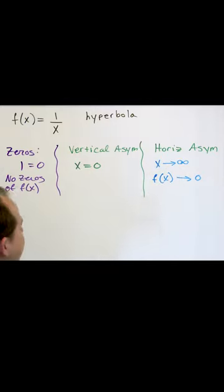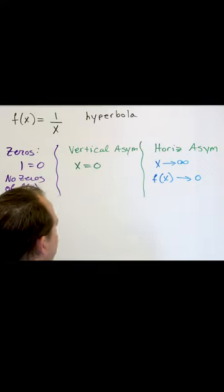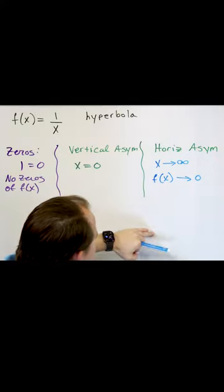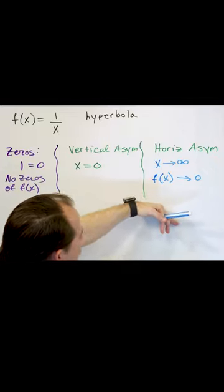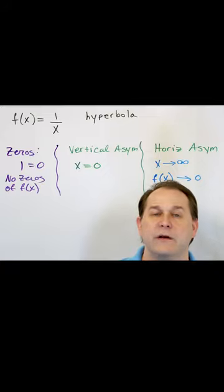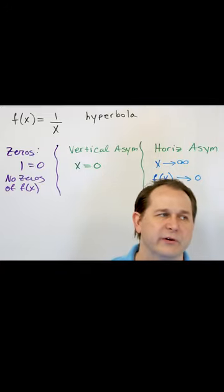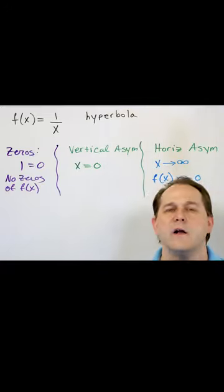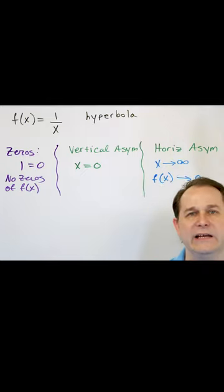So what this means is, and it's going to be a lot more clear once I get the graph on the board, the function, as we go farther and farther in the horizontal direction, gets closer and closer to the value of f equaling zero. So it helps us graph the function because we really want to know what happens when x gets big this direction, what happens when x gets big the other direction.